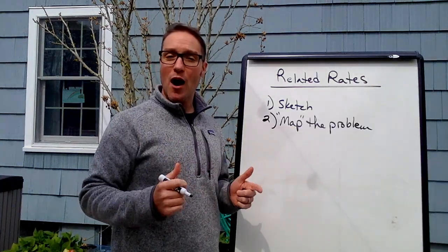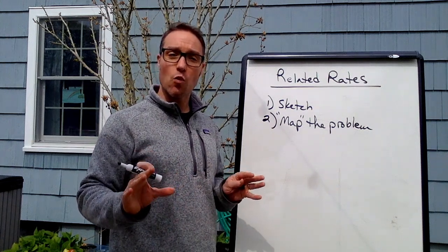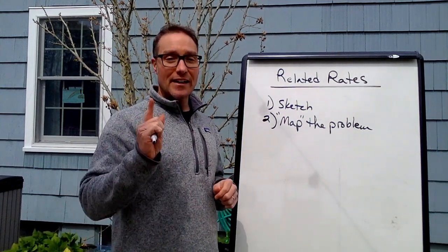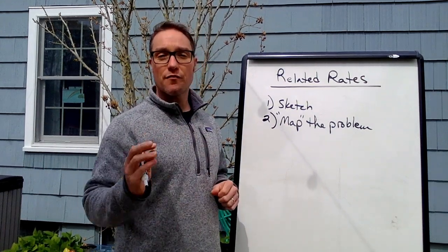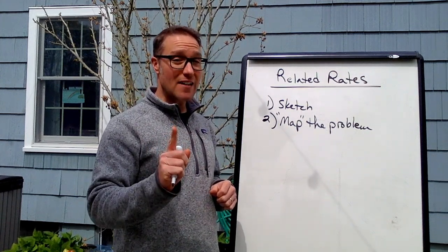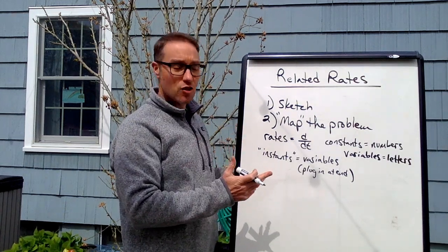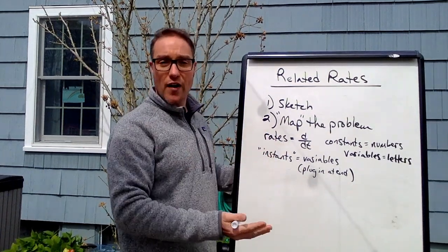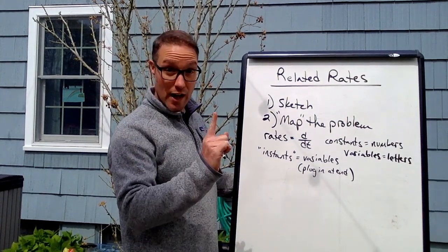Step two is mapping the problem. If you're given a word problem, you want to write down all of the quantities that are known and unknown. In calculus especially, it's important to keep track of what's a constant, what is a variable, what's a rate, what's an instant. There's a big difference between a constant and an instant. Rates of change are going to be d-something/dt — a rate of change is a slope, so it's change in something over change in time. It's a derivative. Constants are numbers, variables are letters, and instants are these special ones that are variables until you plug them in at the end after you relate the rates.